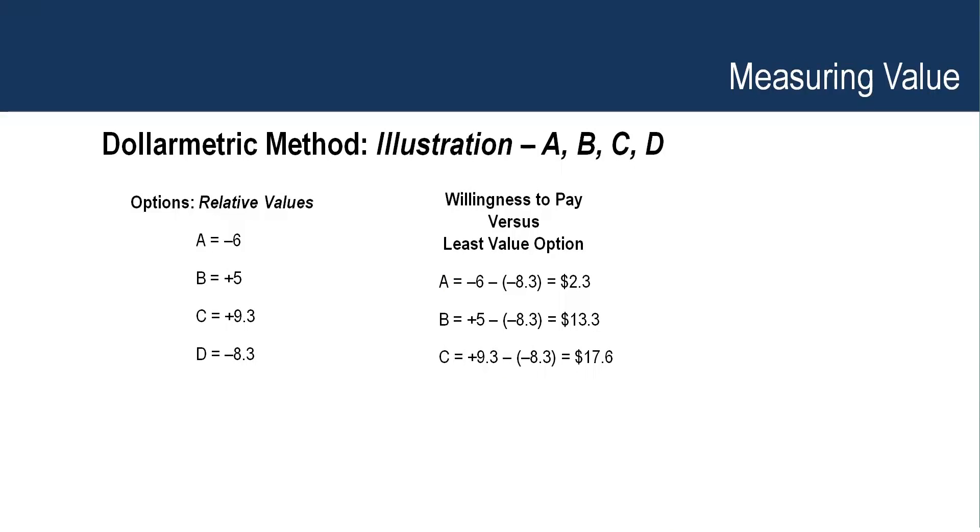This is the dollar metric method — a simple step of pairwise comparison, tabulating the chart, and arriving at a distinctive value for each option A, B, C, and D. In case of A, we are willing to pay 2.3 dollars more than D, the least valued option. We are prepared to pay 13.3 dollars more for B and 17.6 dollars more for C, all in comparison to D. So if you are a price setter for D, you can see where to position your pricing relative to competition.